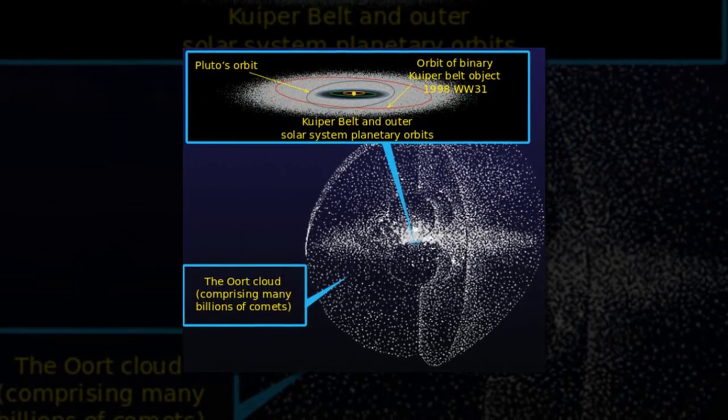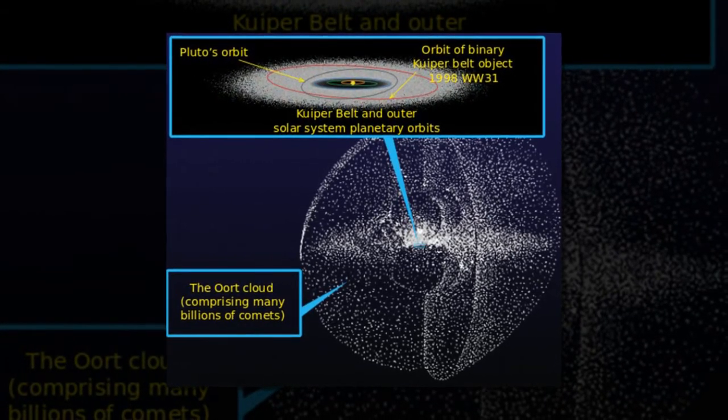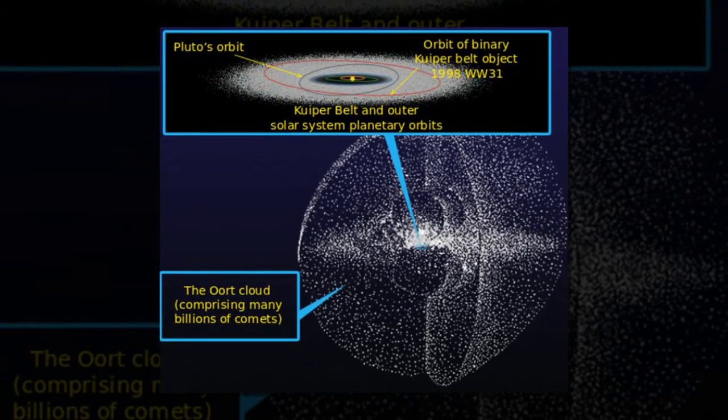Although a significant distance, this is still close in space terms. Alpha Centauri, currently the closest star to Earth beyond our Sun, is some 25.67 trillion miles away.